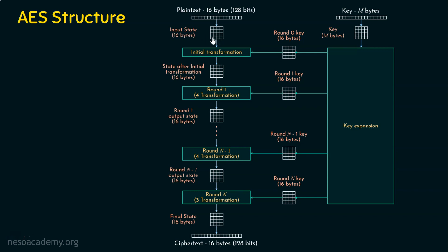This input state is currently storing the plaintext. It is given to an initial transformation, which performs some operation on the input state array values. The transformed value is then given to round 1, where there are 4 transformations. Comparing with DES: the plaintext size in DES is 64 bits, whereas here it is 128 bits. In DES, we had an initial permutation, whereas here we have an initial transformation.